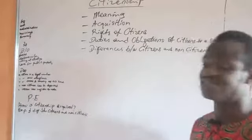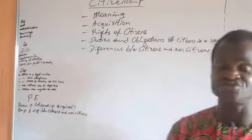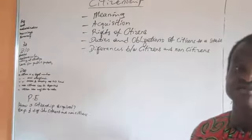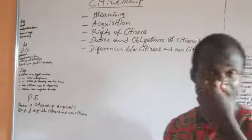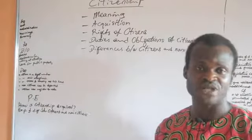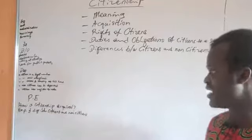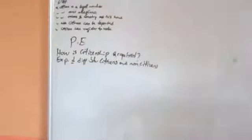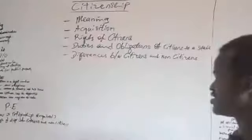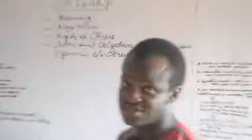A citizen can register and vote in a given election, but a non-citizen cannot register and neither can he vote in a given election. This is what we will take about citizenship for now. But before we go, take this practice exercise: How is citizenship acquired? And then explain the differences between citizens and non-citizens.